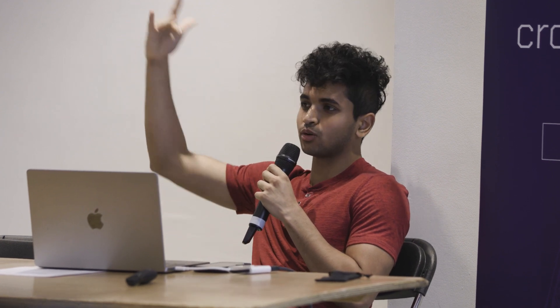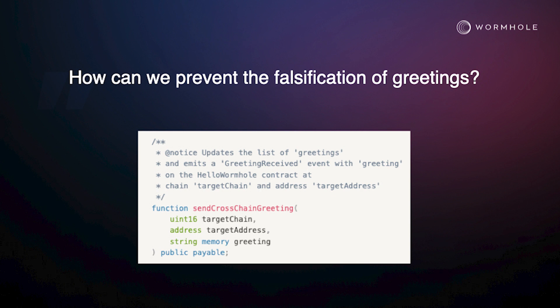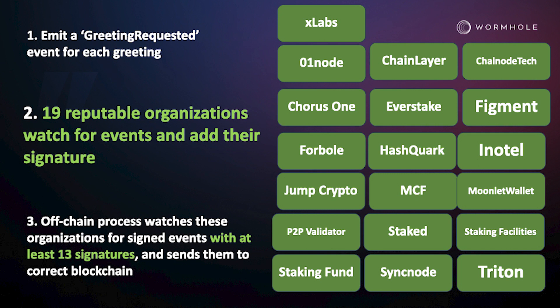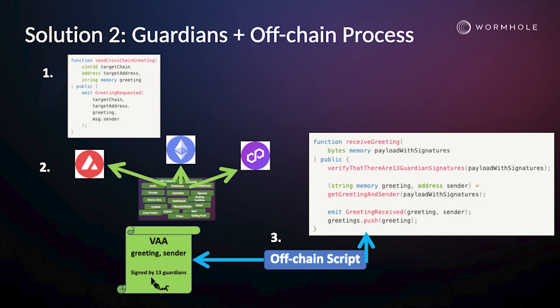We could have the off-chain script call the blockchain, which then stores it. If you look at the receive function, we can update the state in the receiving blockchain. This is how an arbitrary Wormhole app at its core works. You have a source chain that sends a message. Nineteen organizations watch for the message and sign it. Then there's an off-chain script that takes that packet of data with a 13-of-19 signatures quorum, and brings it to a contract on the target chain, which can verify the signatures and do whatever it wants.